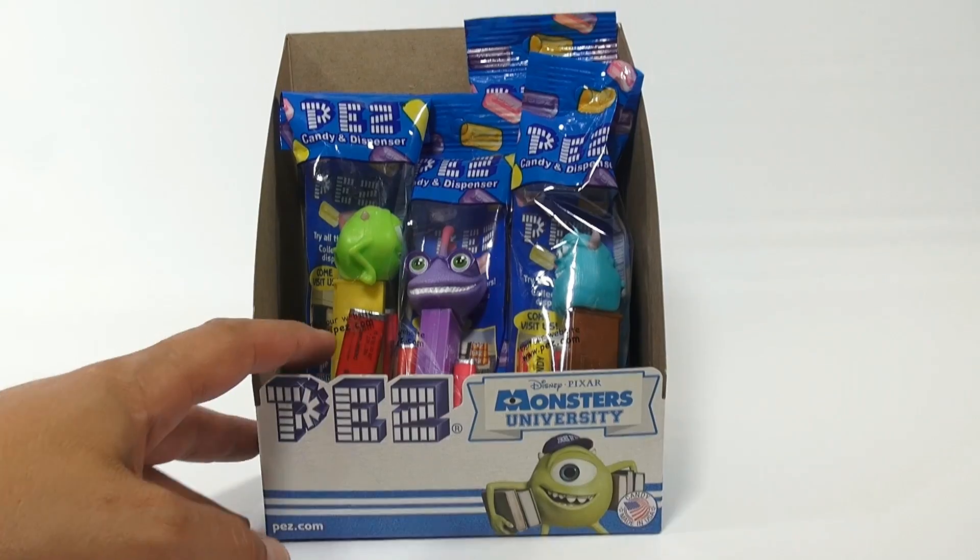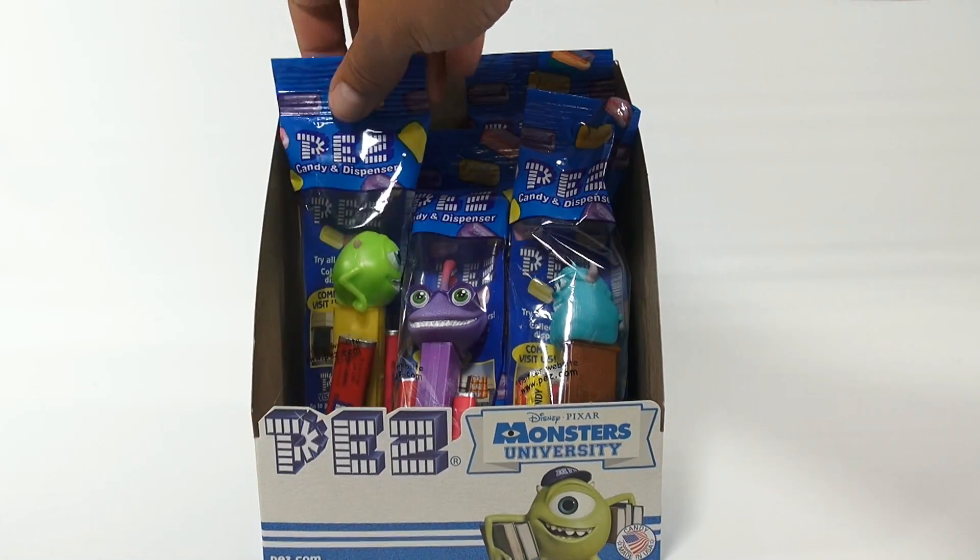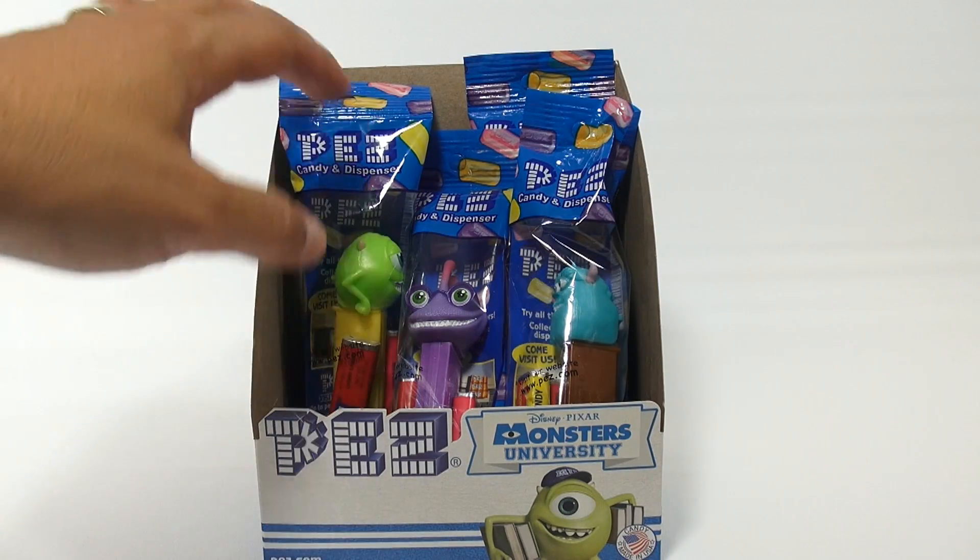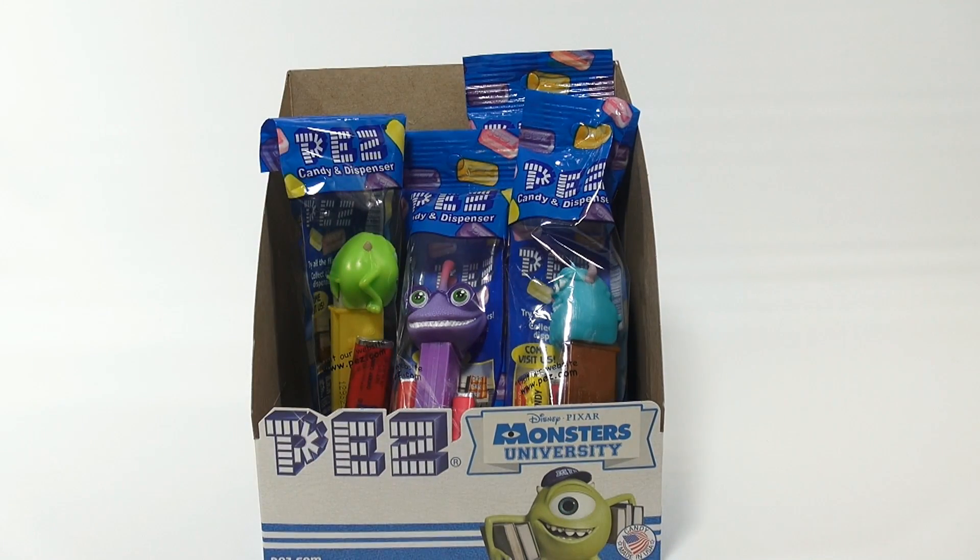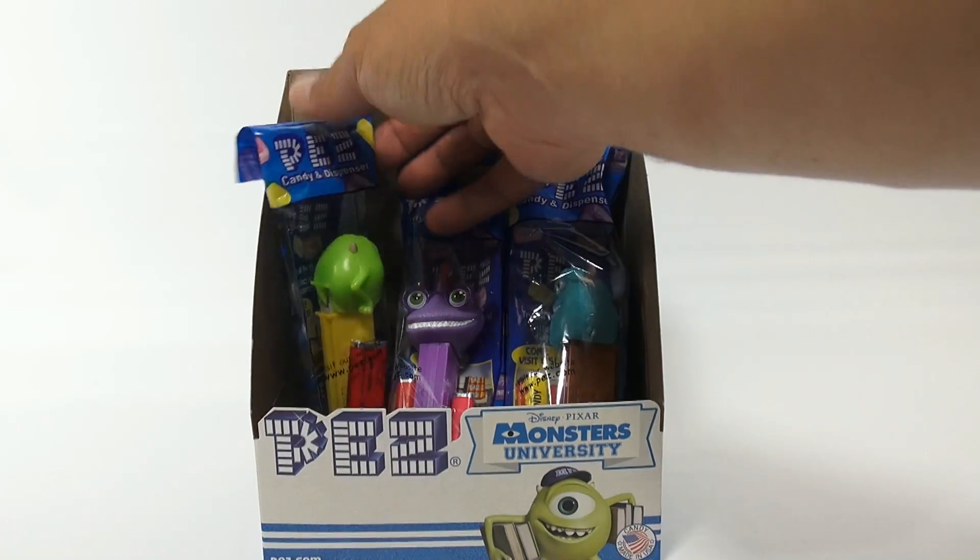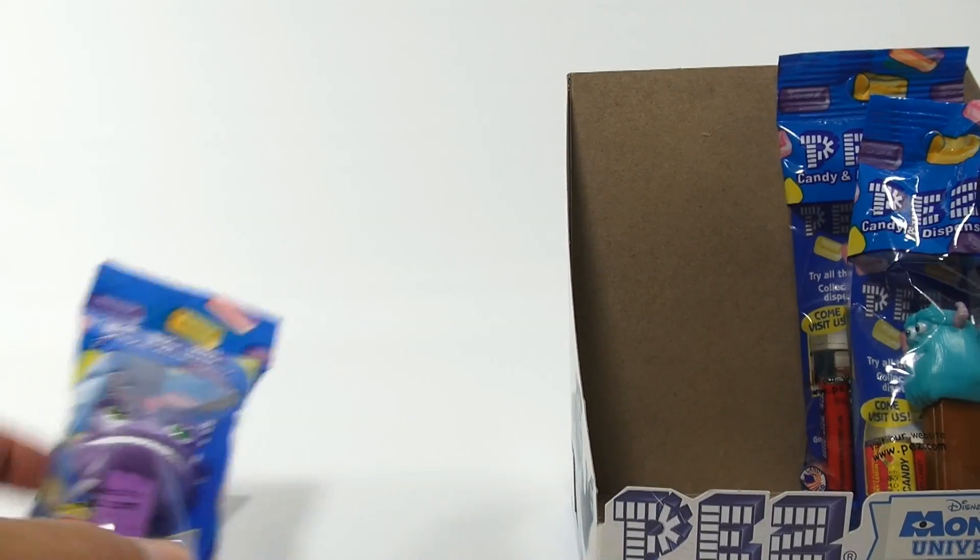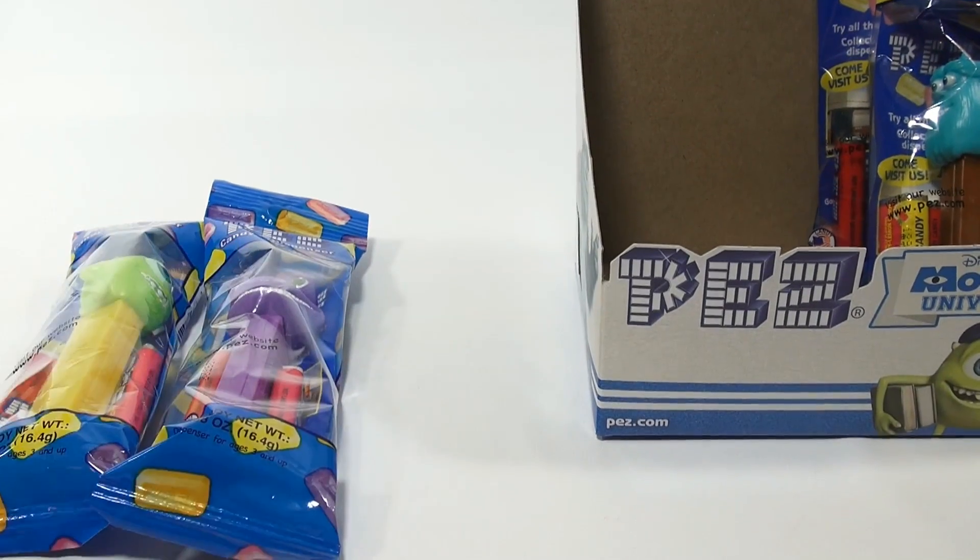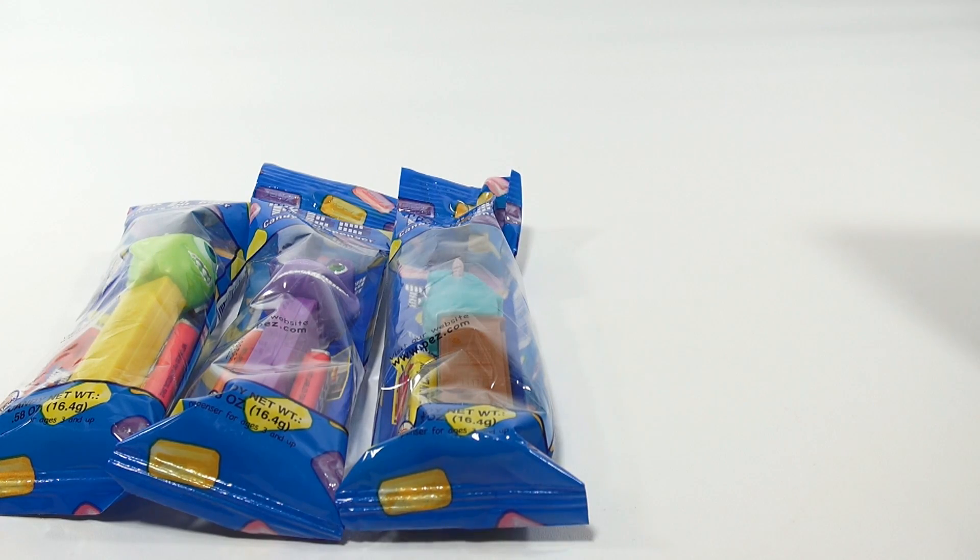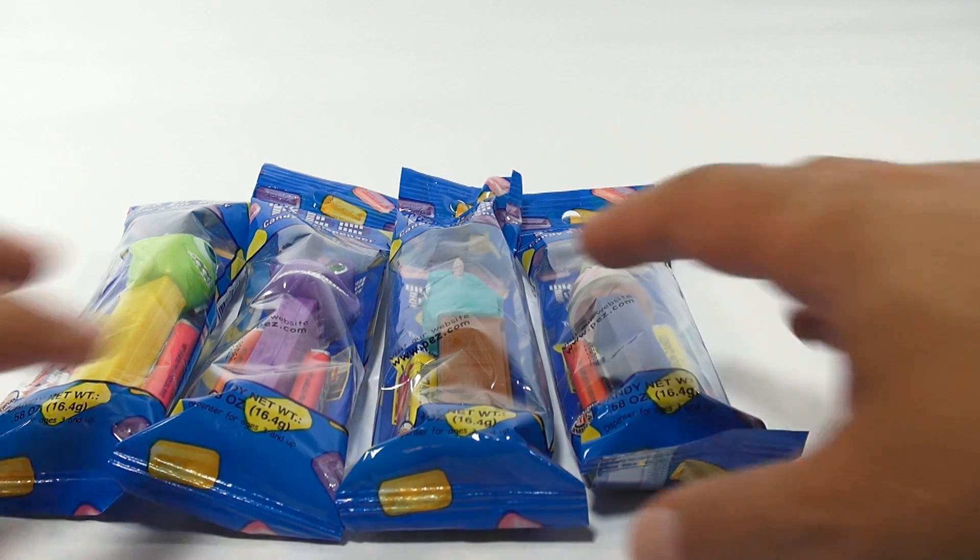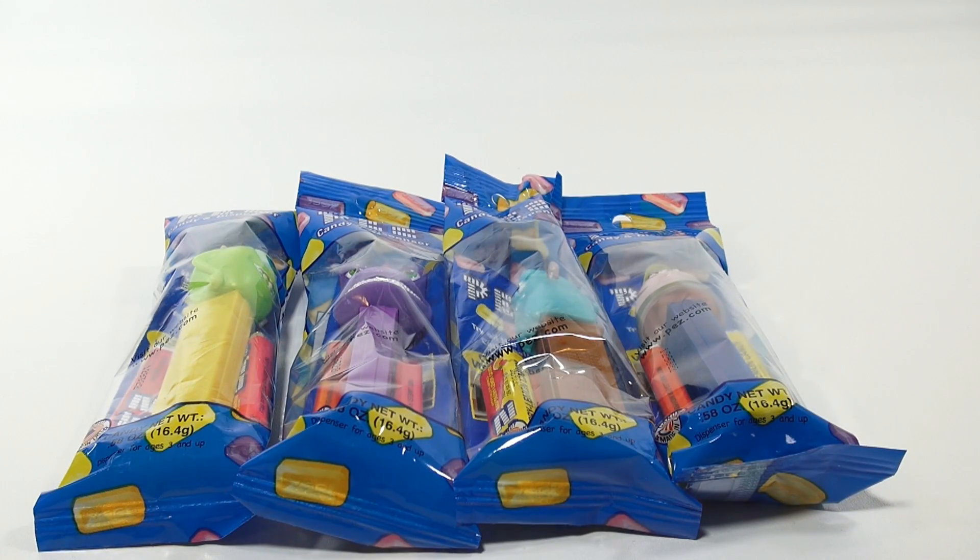Alright, so online I looked, there's these four. I didn't see any other ones from the movie. There's also two versions: a cardboard package with three PEZ, and plastic bags with two PEZ packs in each one. We have Mike Wazowski, Randall Boggs, James P. Sullivan, and the last one is Squishy, or Scott Squishy Squibbles.